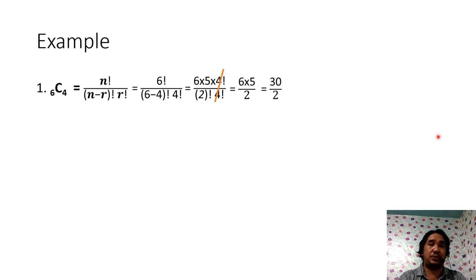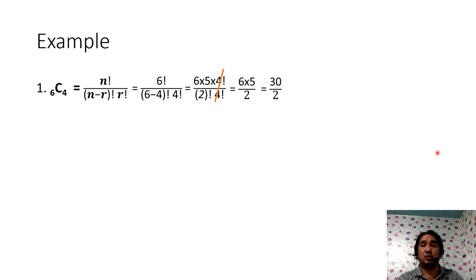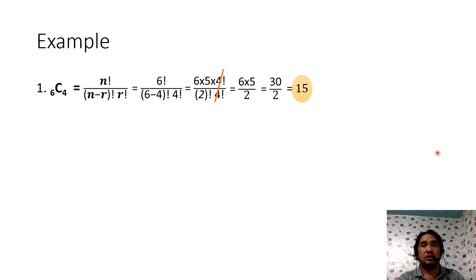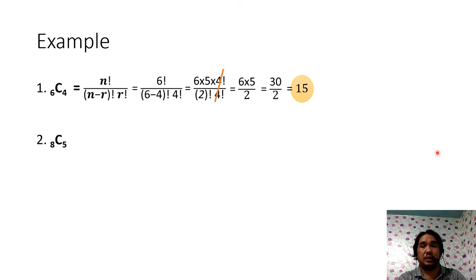What remains is 6 times 5, and 2 factorial equals 2. So 6 times 5 is 30, divided by 2, giving us the answer of 15.